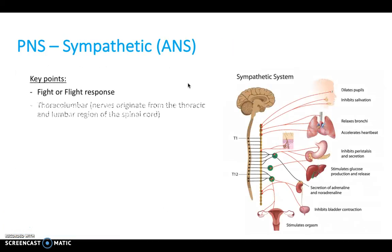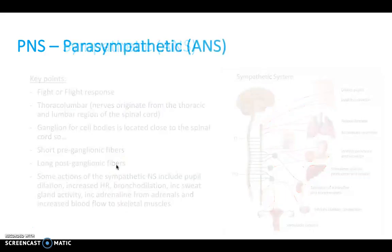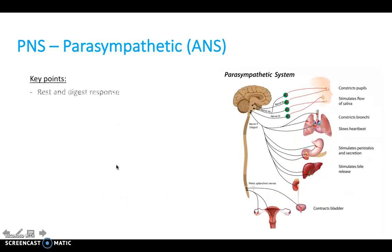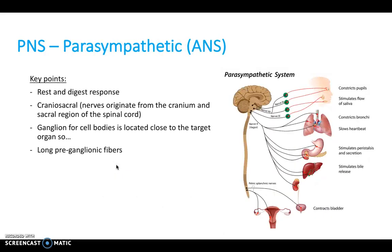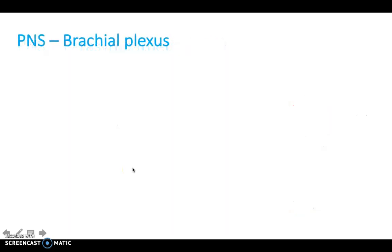The sympathetic nervous system comes from the thoracolumbar regions and is all to do with fight and flight response. These have short preganglionic fibers and long postganglionic fibers. The parasympathetic nervous system is rest and digest and comes from the craniosacral region. In contrast, they have long preganglionic fibers and short postganglionic fibers.